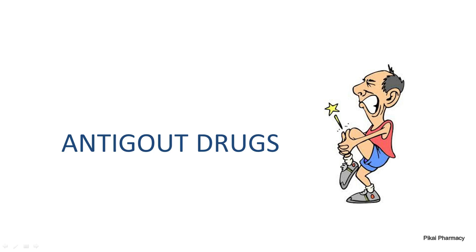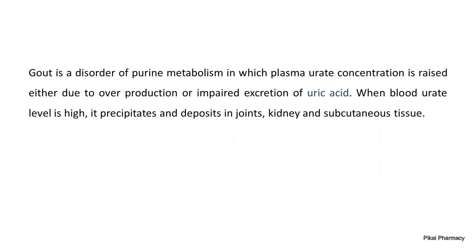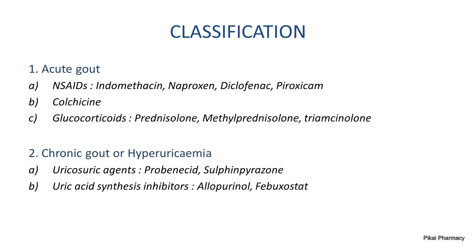Welcome to PKI Pharmacy. Today we will be learning about anti-gout drugs. Gout is a disorder of purine metabolism in which plasma urate concentration is raised either due to overproduction or impaired excretion of uric acid. When the blood urate level is too high, uric acid precipitates down as urate crystals and gets deposited in our joints, kidneys, and subcutaneous tissues.